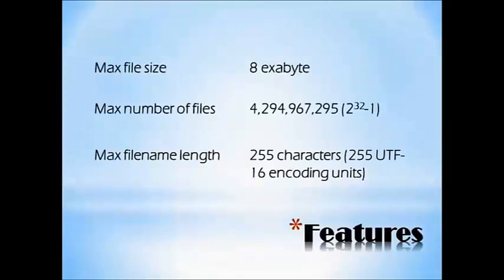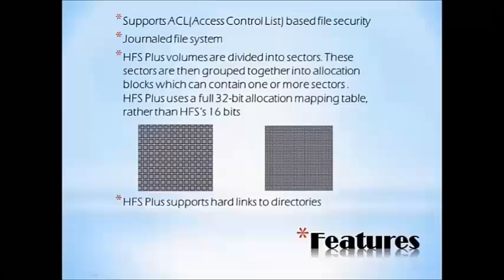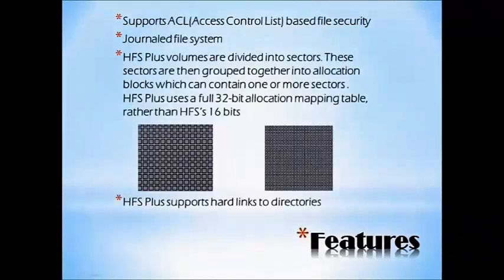The features of HFS Plus include: a maximum file size of 8 exabytes, a maximum number of files of 2 to the power of 32 minus 1, and a maximum file name length of 255 characters. HFS Plus also supports access control lists for file security. It is a journaled file system. HFS Plus volumes are divided into sectors, which are then grouped together into allocation blocks that can contain one or more sectors.